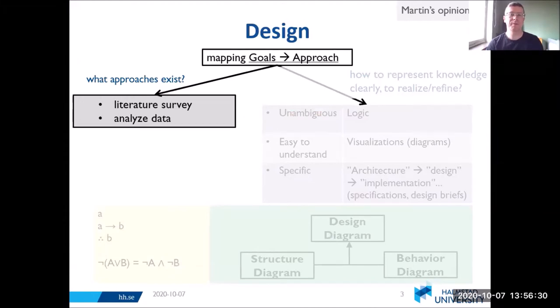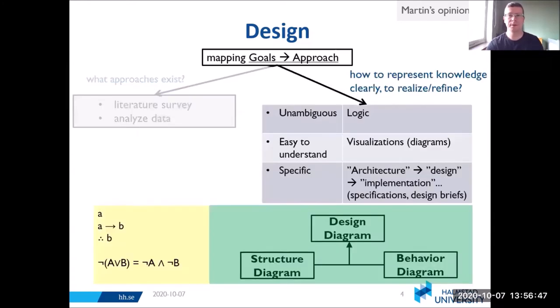Basically this involves mapping your goals to the approach that you're going to use. One of the first things you want to do is find out what approaches exist. To do that, you can do a literature survey and look at your data to see what's the best way to deal with it.